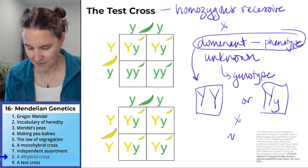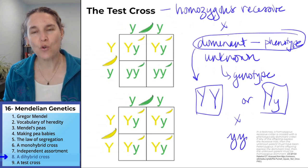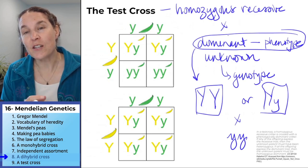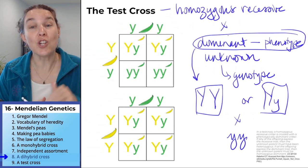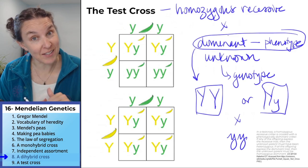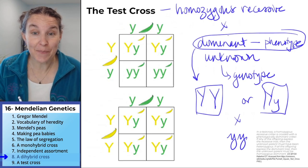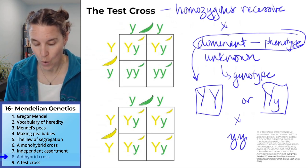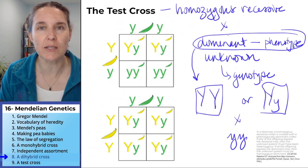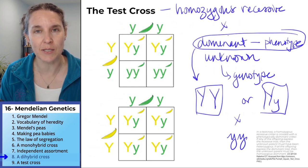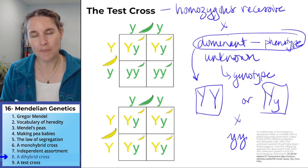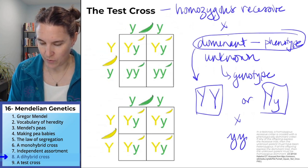If you cross the unknown individual with a known homozygous recessive individual for the same trait, and then look at the babies, you can figure out if the person was heterozygous or homozygous, and I'm saying persons and peas, it's the same difference.